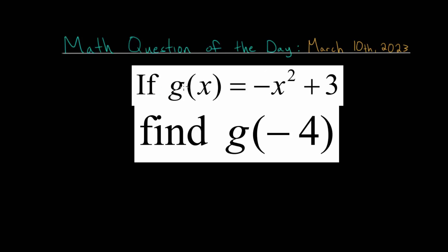With this problem, we are given a function g of x, and this is a quadratic function, and we need to find g of negative 4.